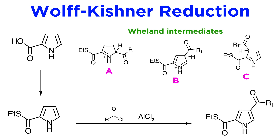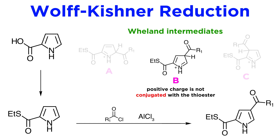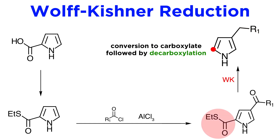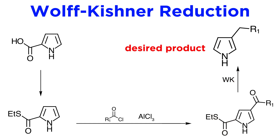The reason for this is easy to see by drawing the Wheland intermediates leading to all three possible isomeric products. Of the three isomeric intermediates, A and C place a positive charge next to the electron-withdrawing thioester group, and are therefore disfavored, whereas isomer B has the positive charge in a position that is not conjugated with the thioester, and is therefore much more stable. Under Wolf-Kishner conditions, the acyl group at C4 is reduced to an alkyl group. The thioester is hydrolyzed to a carboxylic acid, and it is known that pyrrole-2-carboxylates readily decarboxylate, so they lose CO2 under basic conditions, which leaves us with the desired product.